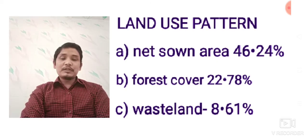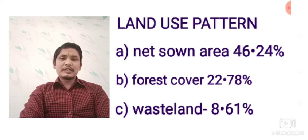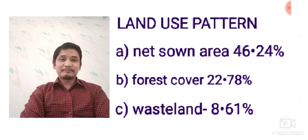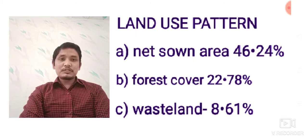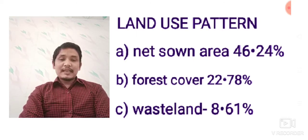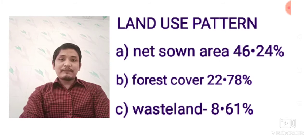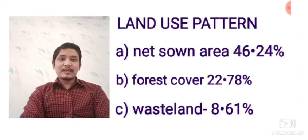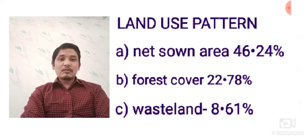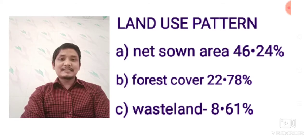The last category is wasteland. Wasteland includes desert areas and similar barren lands. So the important questions here are: explain the land use pattern in India, define net sown area, and explain why forest cover has not increased since 1960-61.